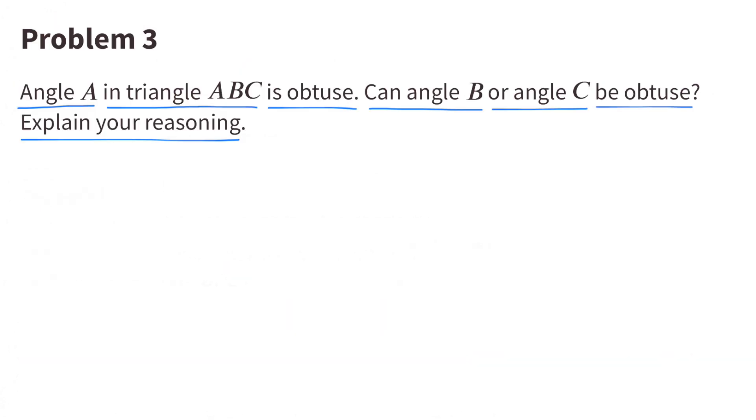Number 3. Angle A in triangle ABC is obtuse. Can angle B or angle C be obtuse? Explain your reasoning.